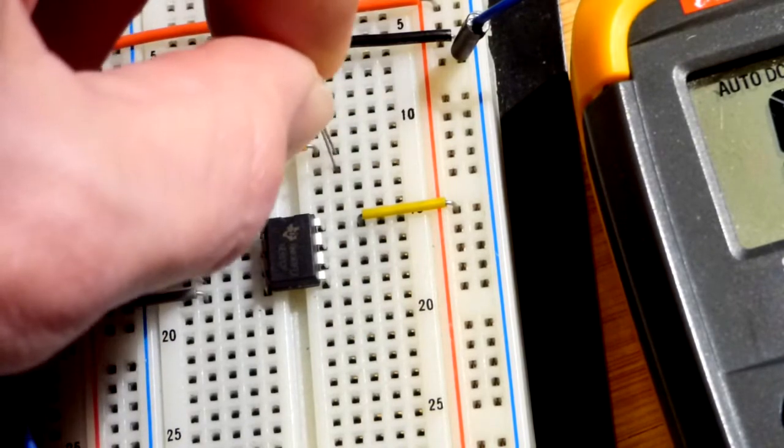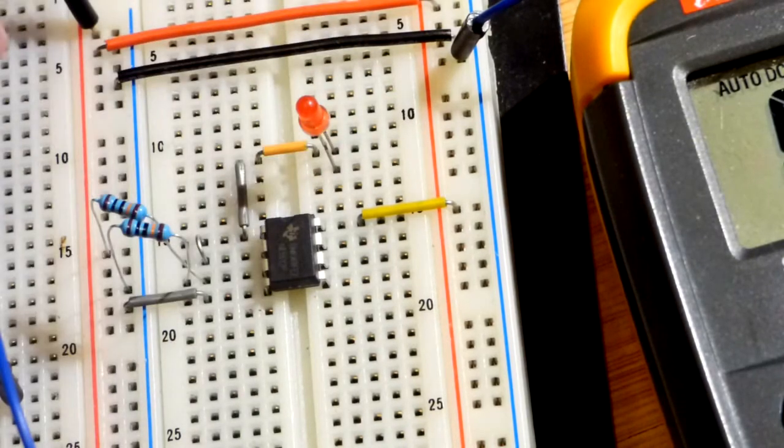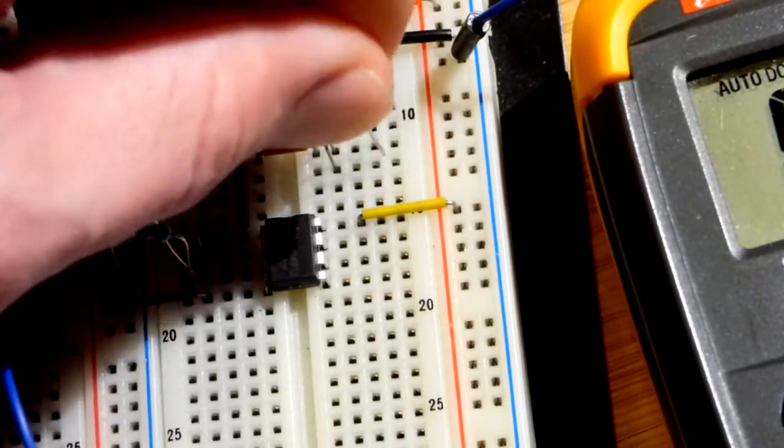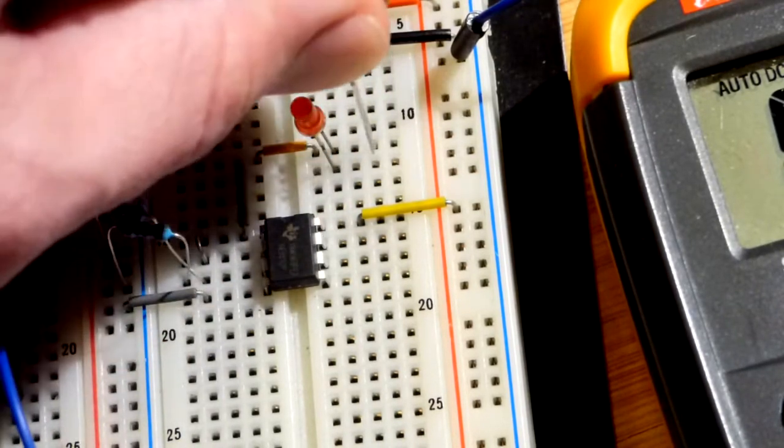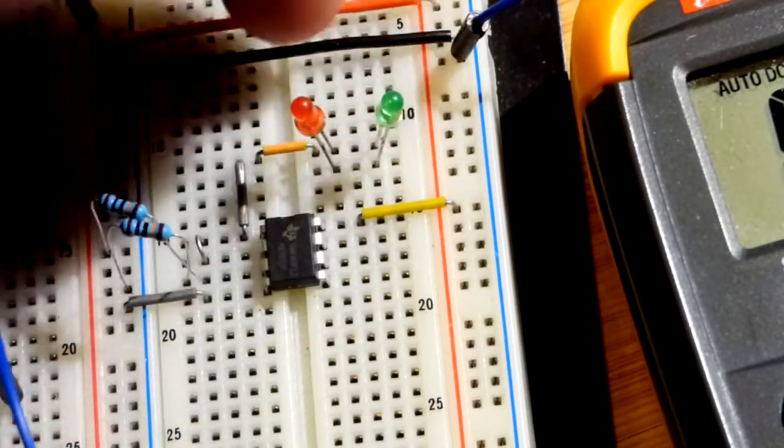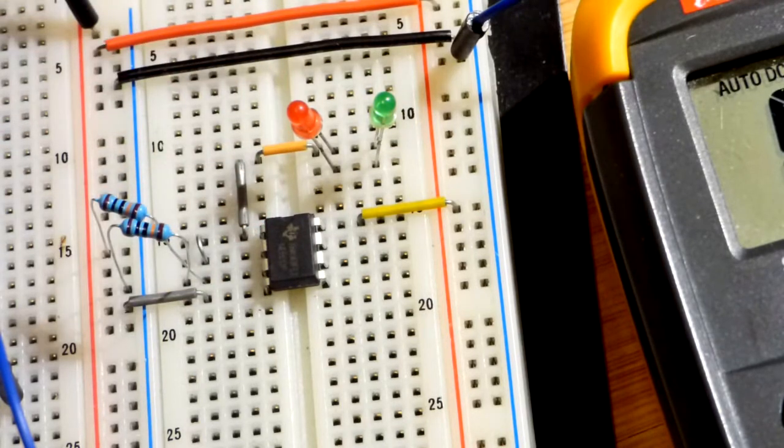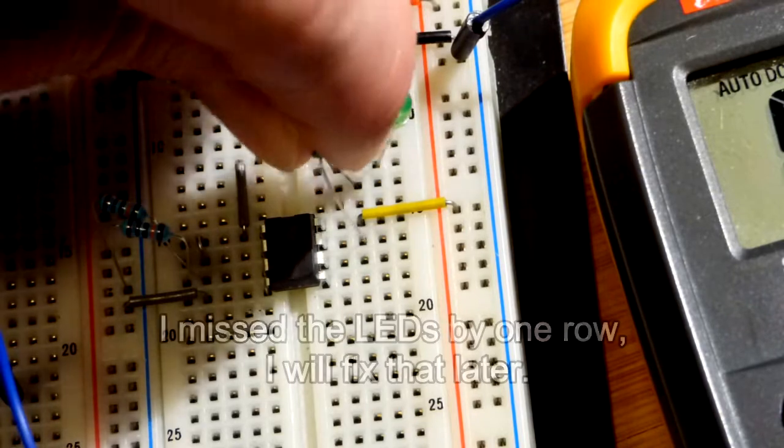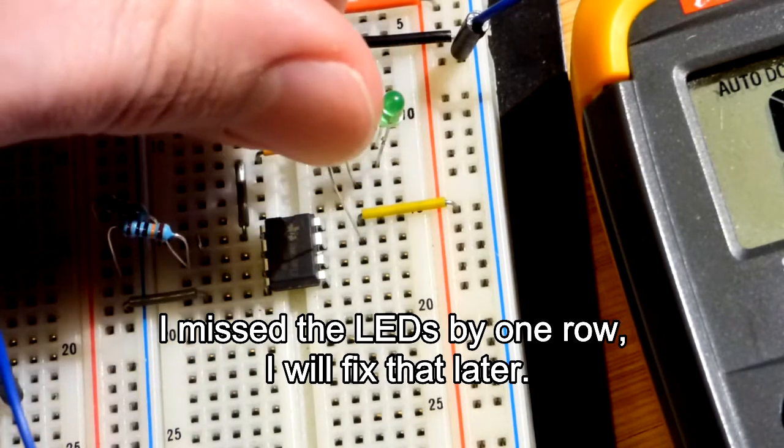So green LED is going to be the opposite because we want it to light when the output of our inverting comparator is more negative. So we have the long lead, the anode to this jumper, which goes to our virtual ground. And we'll just use a one kilo ohm resistor to protect the LEDs right there.